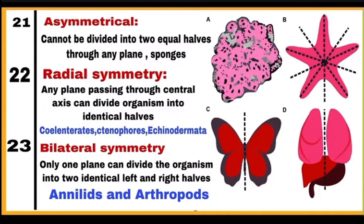Asymmetrical body: when the organism cannot be divided into two equal halves through any plane, as in sponges. Radial symmetry: any plane passing through the central axis can divide the organism into identical halves, as in coelenterates, ctenophores and echinoderms. Bilateral symmetry: only one plane can divide the organism into two identical left and right halves, seen in annelids and arthropods. In the diagram: A shows an asymmetrical body, B shows a radially symmetrical body, and C shows a bilaterally symmetrical body.